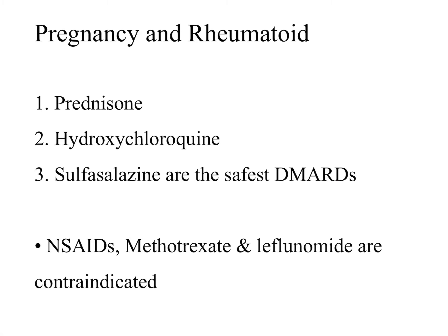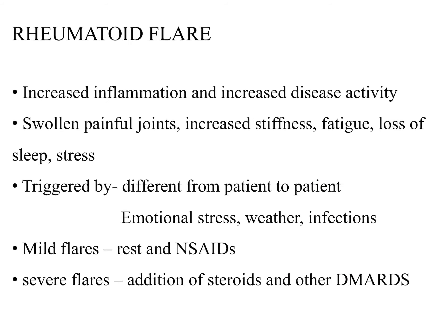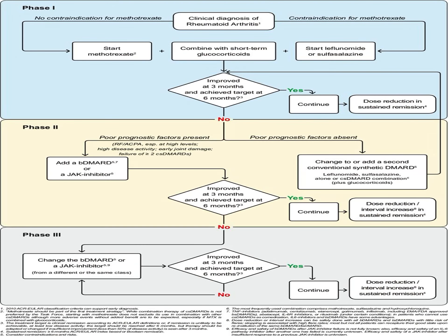Many drugs are contraindicated in pregnancy. If a pregnant female presents with rheumatoid arthritis, our options are a short low dose of prednisolone, hydroxychloroquine, and sulfasalazine — these are the two safest DMARDs in pregnancy. NSAIDs, methotrexate, and leflunomide are all contraindicated in pregnancy. This covers how we proceed when a patient presents with rheumatoid arthritis. Thank you.